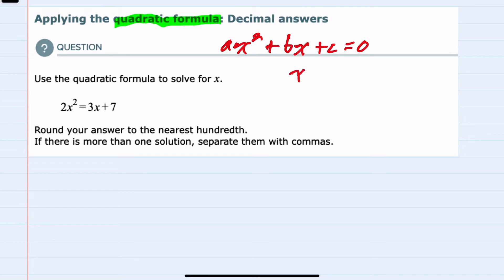solutions can be found for x using the formula: x equals negative b plus or minus the square root of b² minus 4ac, over 2a.